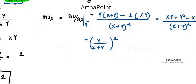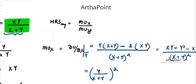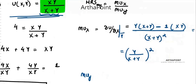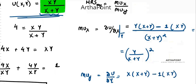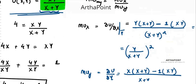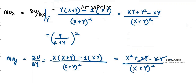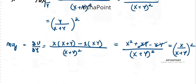Now find MUy — differentiate the utility function with respect to y. Differentiation of the numerator into denominator as it is, minus differentiation of the denominator into numerator as it is, upon denominator squared. This gives x squared plus xy minus xy upon x plus y squared, which is x squared upon x plus y squared.